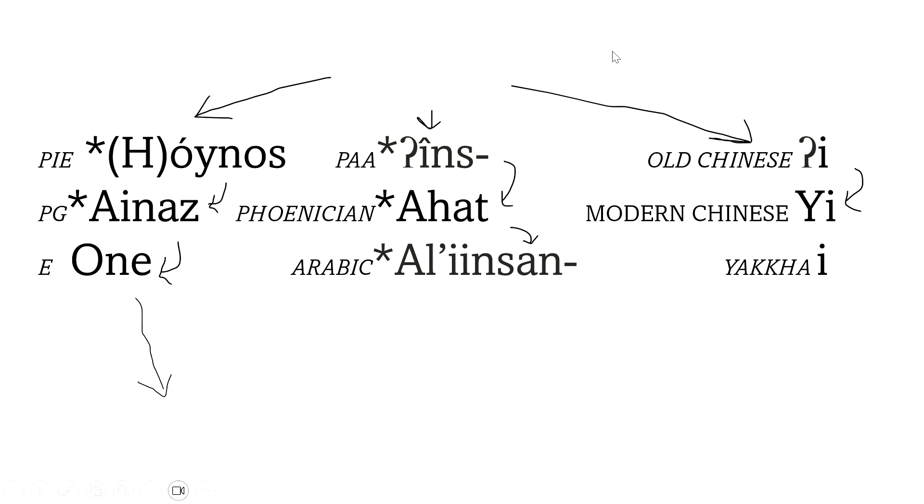Without further ado, this is my guess. Yes, it is identical to Proto-Afro-Asiatic word, but it has the shortest amount of steps. For Old Chinese, you just remove two letters, and for Indo-European, you just add two o's, like here and here.